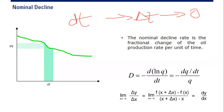Nominal decline rate is actually very good if you want to use it for engineering analysis, reservoir engineering analysis. This is the mathematically correct way to express the decline of performance. And if you want to know the cumulative production using nominal decline rate, you will get a very accurate, theoretically correct cumulative production.